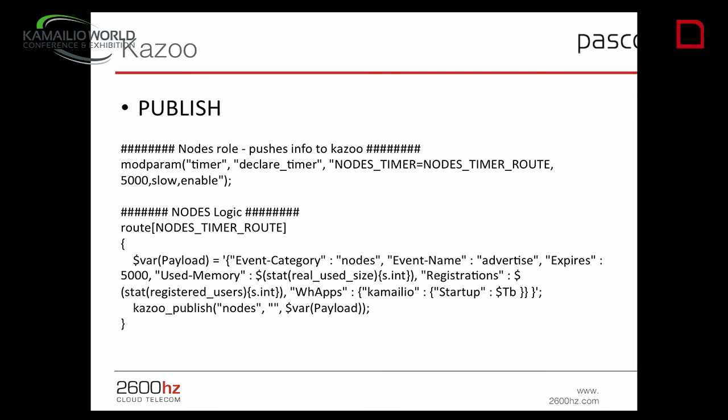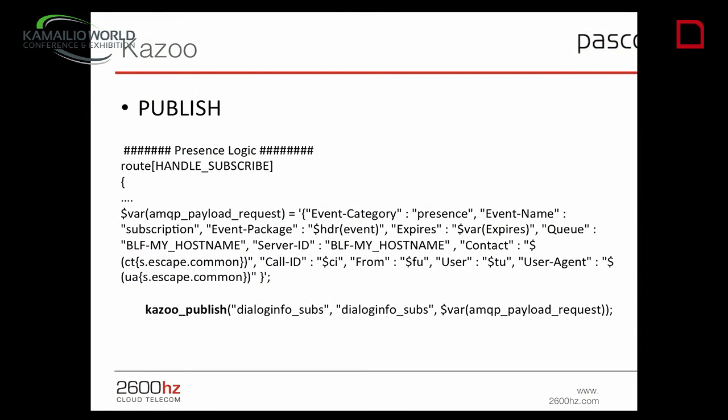About publishing — it's quite easy. This one acts on a timer. You declare the timer, run a route, create a message, and send the same message we receive about new FreeSwitch servers. Camellio here is sending 'hey, I'm alive, I'm here' with some stats, so any other app creating a list of available Camellio servers can track the number of registrations on each one. Another use is for handling subscriptions — we just tell the backend what endpoint has subscribed to what user or URI.